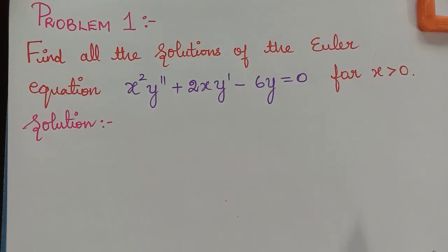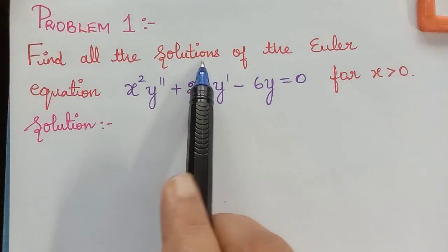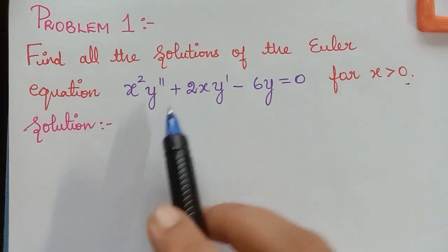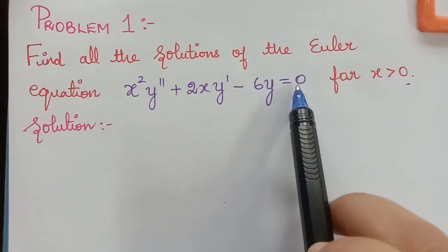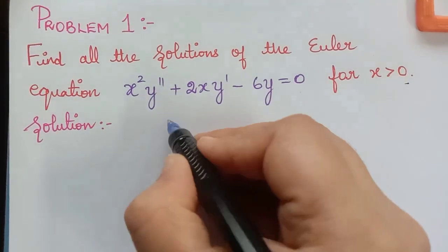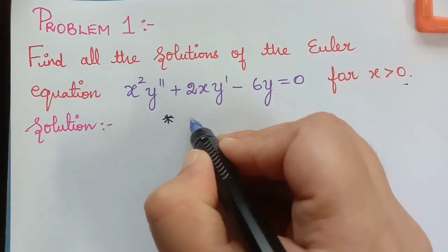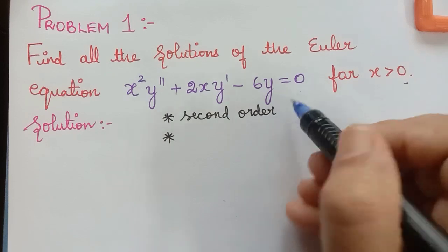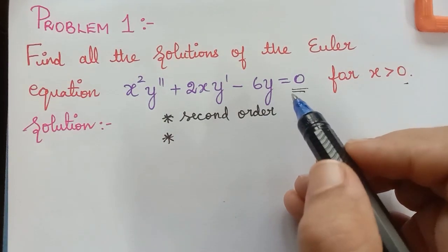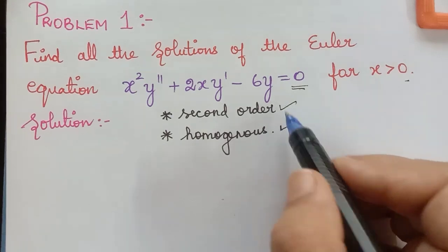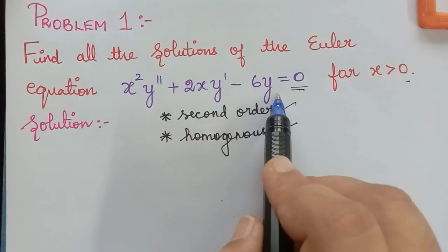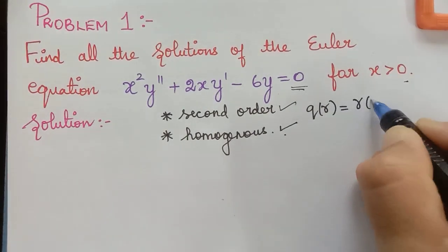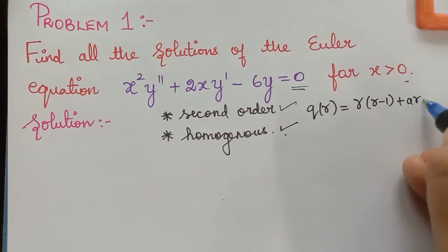The first problem we are going to solve is: find all the solutions of the Euler equation for x greater than 0. First we have to identify what kind of Euler equation this is. It is a second-order Euler equation, and it is a homogeneous Euler equation because the right side is 0. For such an equation, the first step is to write the indicial polynomial. We know that q of r is given by r multiplied with r minus 1 plus ar plus b.